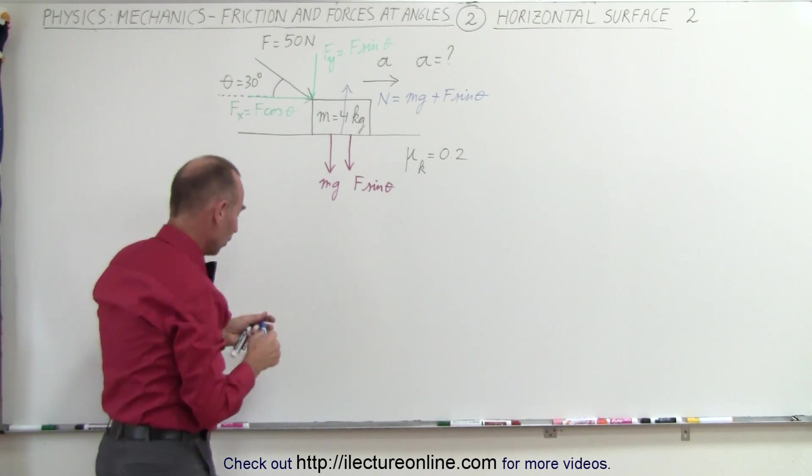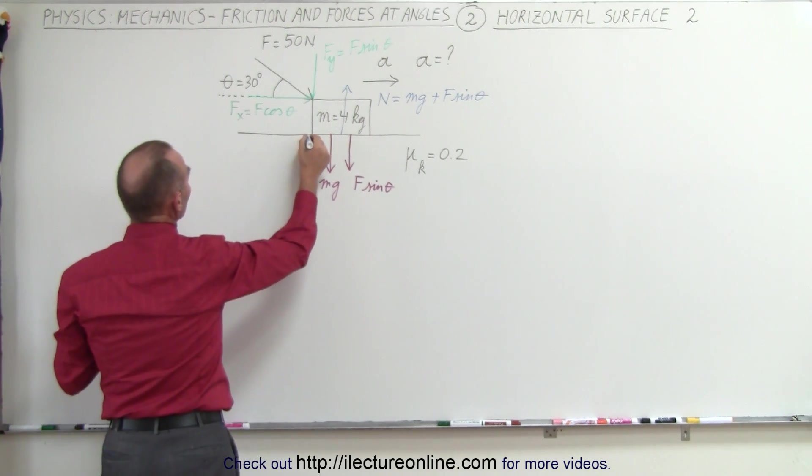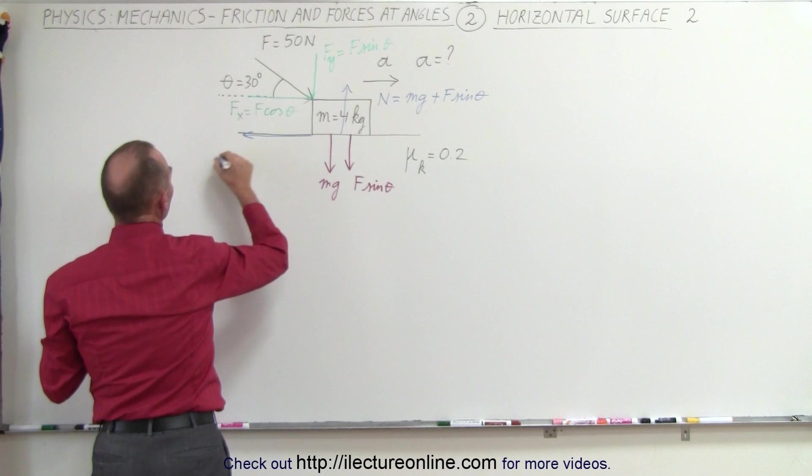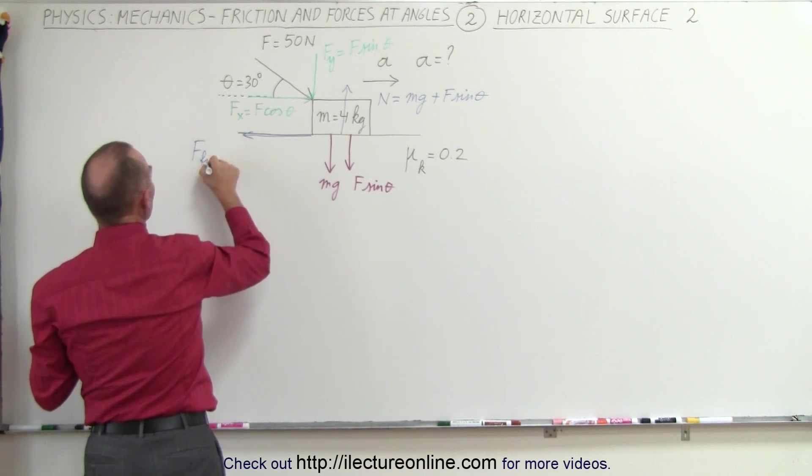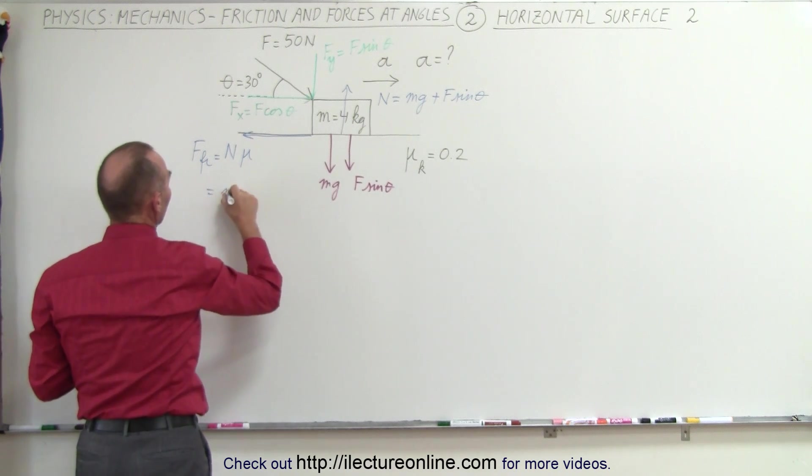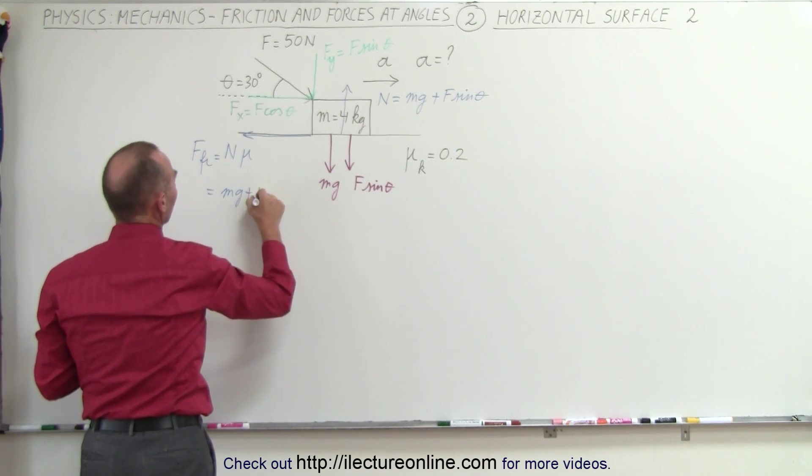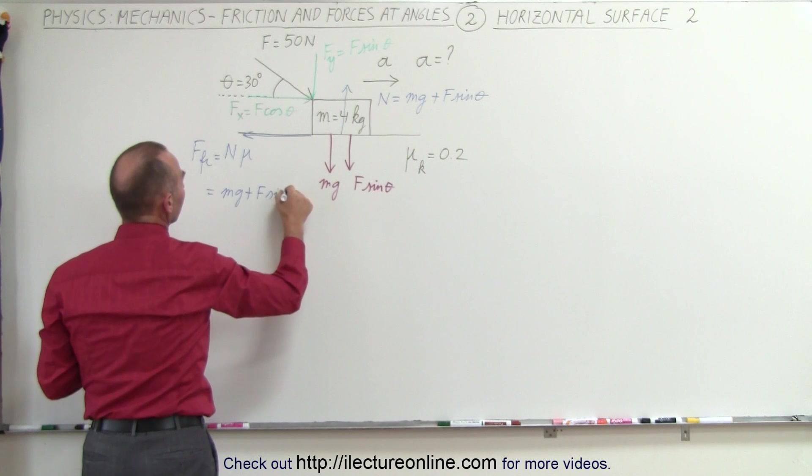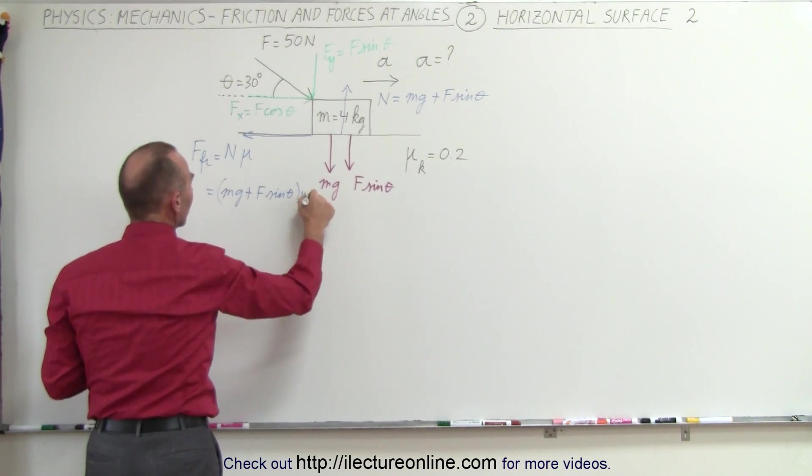That will cause a friction force pushing in this direction, and the friction force would be, by definition, the normal force times mu. In this case, the normal force is mg plus f sine of theta, and then we multiply that times mu.